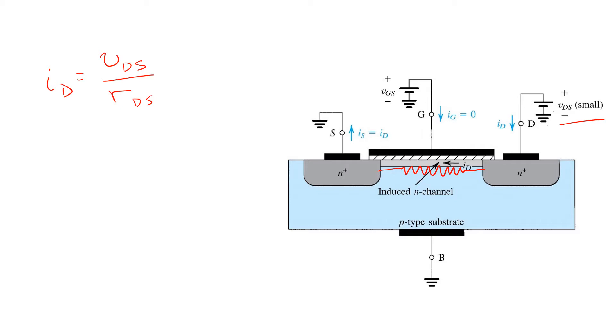The larger the overdrive voltage VOV, defined as the gate source voltage minus the threshold voltage, the more charge appears in the channel region and the lower the channel resistance becomes. So it's not surprising that RDS is inversely proportional to VOV.